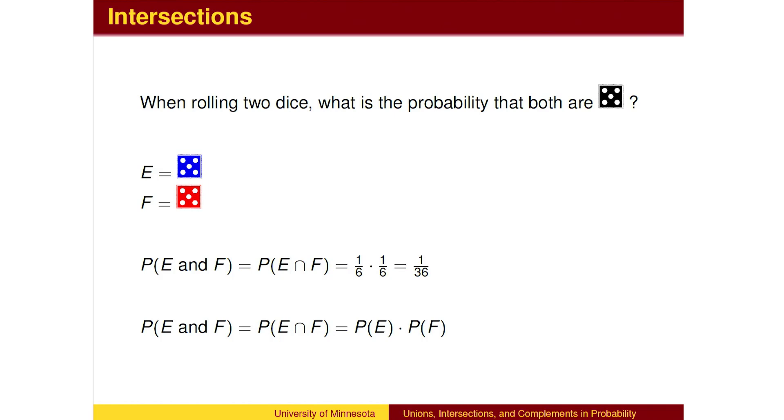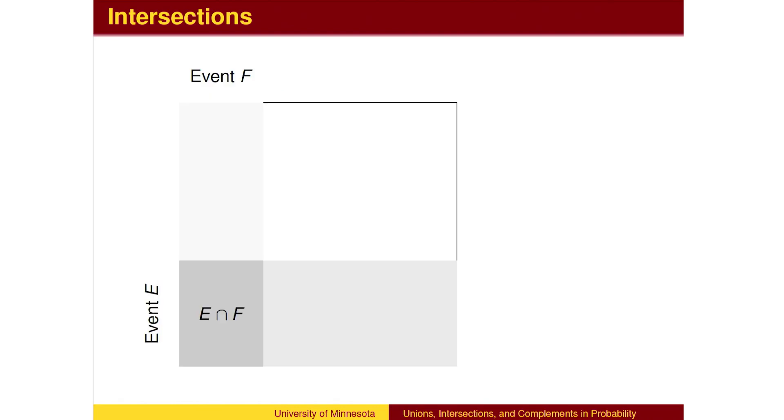Formally, when combining probabilities of independent events using AND, we can find the probability of both by multiplying. This can be seen by the general counting principle. To compute the denominator, we find the total possibilities by computing the area of the large rectangle.